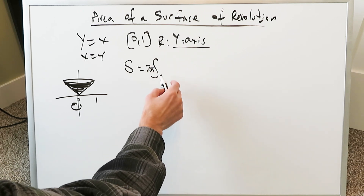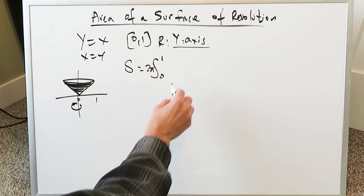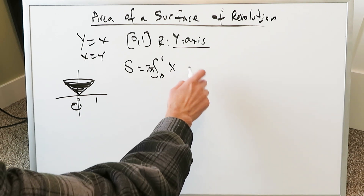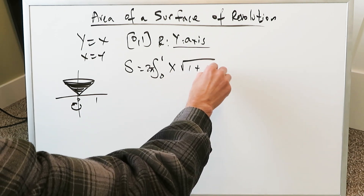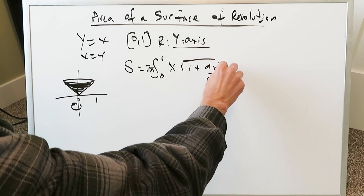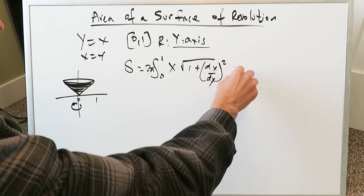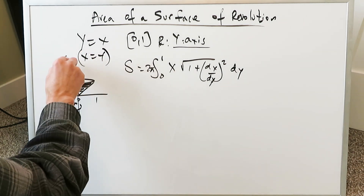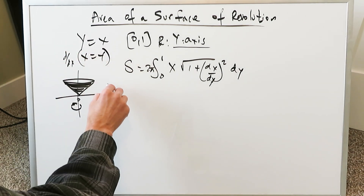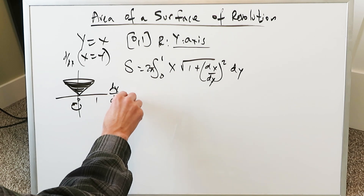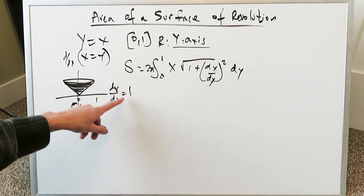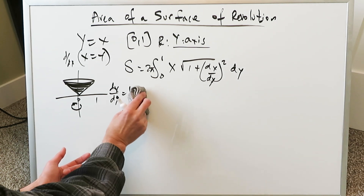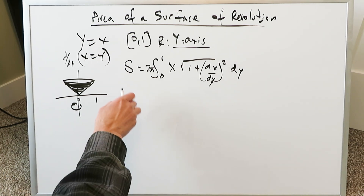You have a 2π pushed outside, looking from a lower limit to upper limit. You're looking at the x equals equation, then 1 plus dx over dy whole squared, and dy. If x is equal to y, the derivative — dx over dy — is going to yield a 1. The derivative of y will be 1, and you'll see that come into play. dx over dy is equal to 1. Everything falls into place.